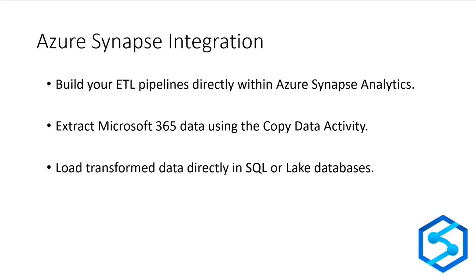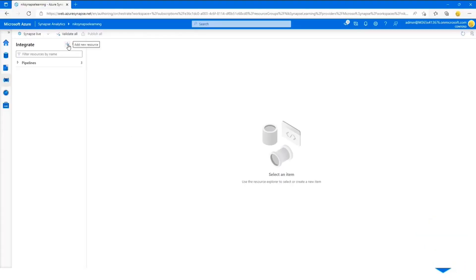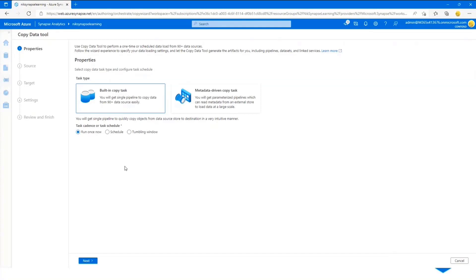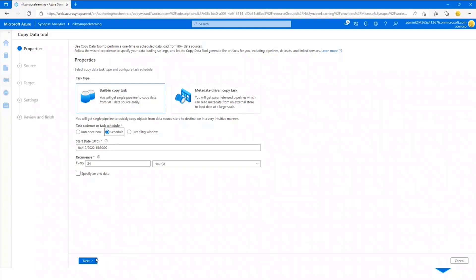We recently introduced support for Azure Synapse Analytics, meaning directly within Synapse you can create pipelines to extract your Microsoft 365 data using Microsoft Graph Data Connect. From there you can perform transformations using a no-code approach with data flows or use Spark notebooks for more coding. Everything is baked into the Synapse workspace. We've also been working on a new copy data wizard because getting started with Synapse or Azure Data Factory can be challenging for some.